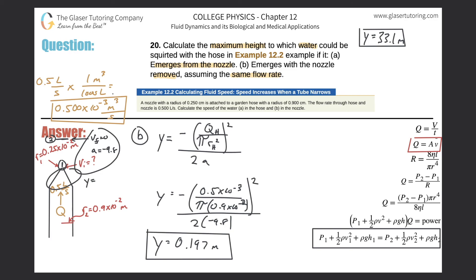So without the nozzle, assuming the same flow rate, the water only reaches about 0.197 meters. That makes intuitive sense: with the nozzle the water shoots up about 33 meters, but without it the velocity is much lower and the water barely rises. Thanks for watching — please subscribe and tell your friends!